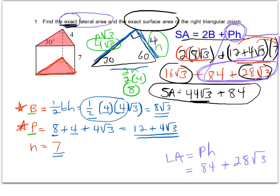And again, I can't combine those. So my final answer for lateral area is 84 plus 28 root 3. I want to add, because it's area, I'm going to say unit squared. I did not do that up above on the total surface area, unit squared. And those are my two answers.